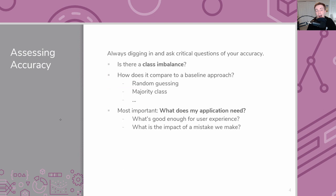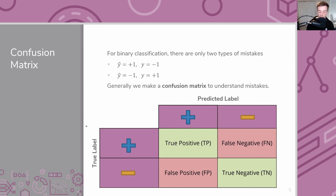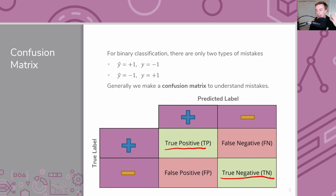We talked about the confusion matrix — looking at true positives versus true negatives. The terminology works like this: 'true' or 'false' tells you whether your prediction was correct, and the label tells you what you predicted. A true positive means you predicted positive and were correct; a true negative means you predicted negative and were correct. A false negative is when you predict negative but were wrong, and a false positive is when you predict positive but were wrong.